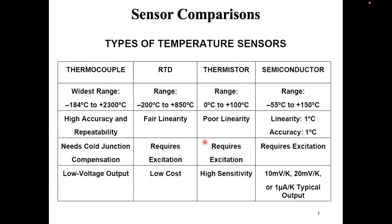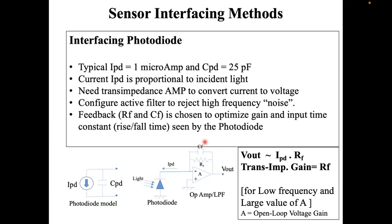All these are examples of simple interfacing circuits used to interface the sensor. As mentioned, the interfacing circuit can be for amplifying the power, current, or voltage from the sensor; for rejecting high-frequency noise; or for providing a buffering stage to isolate the output from the next stage with respect to the sensing stage and avoid any loading effect.